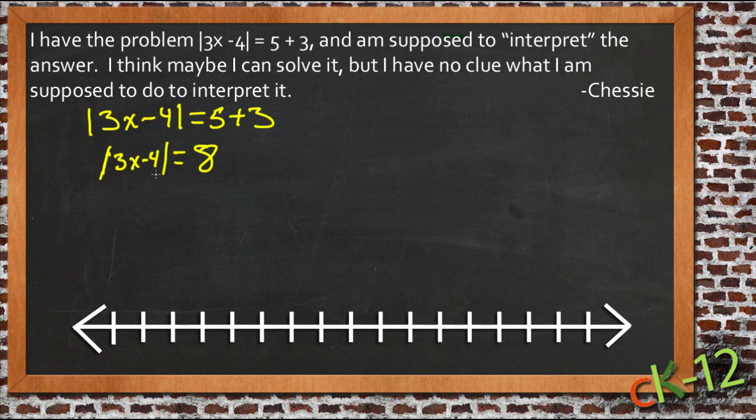Now the trick to absolute values is that anything inside the absolute value symbols could be positive or negative, and they'd end up coming out the same way. So what that says is what's in here is going to have to be equal to 8. But if it's going to be made positive no matter what it is, then what was in here could actually be equal to negative 8 as well, because then when I took the absolute value of it, it would equal 8 then.